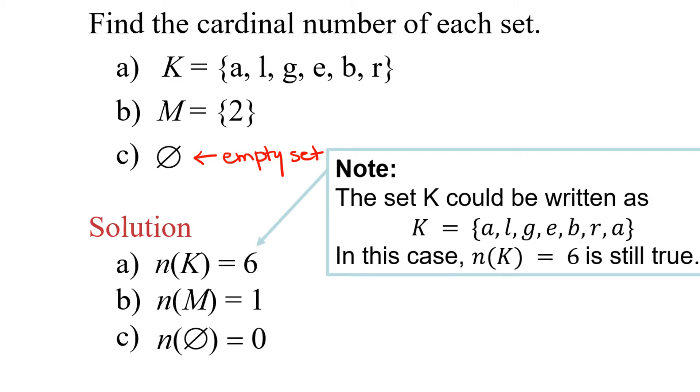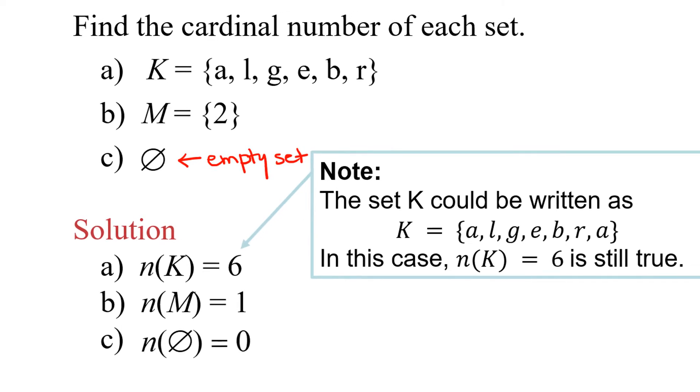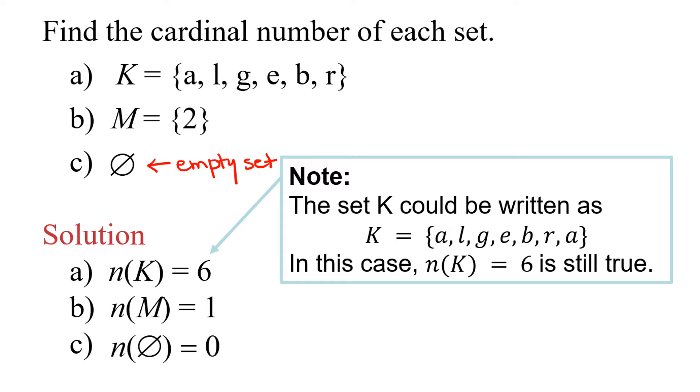Now let's go back to the set K for a second. I just want to point out that the set K almost spells algebra, everybody's favorite subject, but it's missing that second A and that's because in sets we never list an element twice. Even if we did list it twice, the number of elements would still be considered to be six because when we find cardinality, we're counting the number of unique elements.